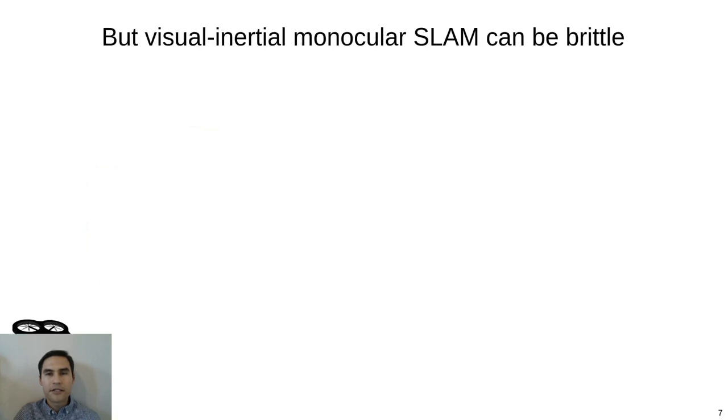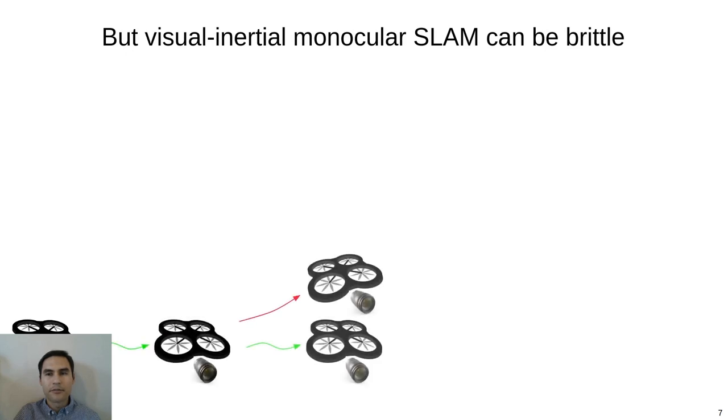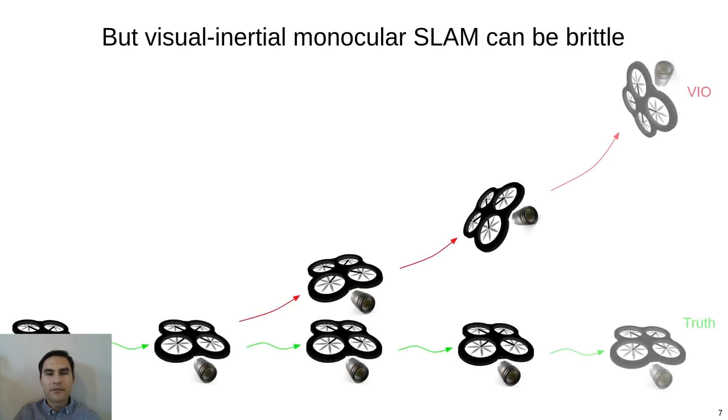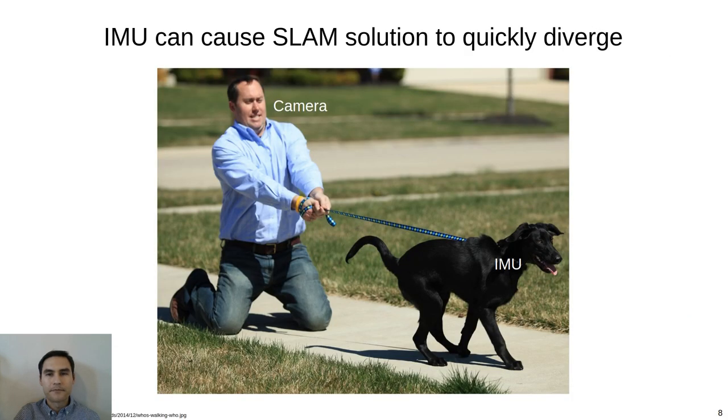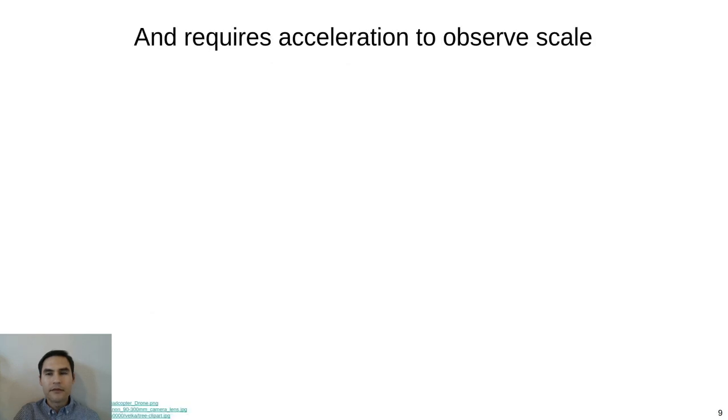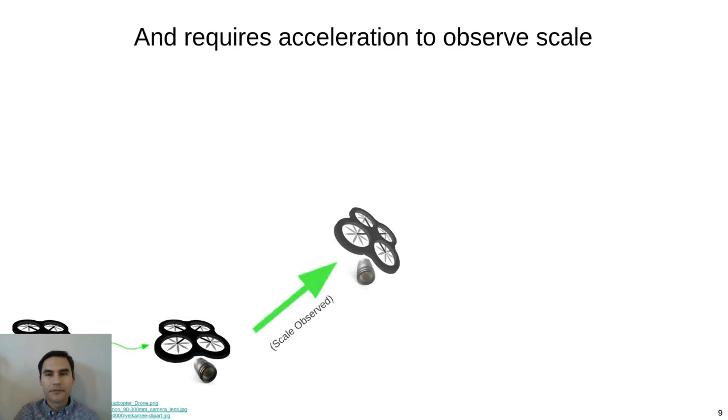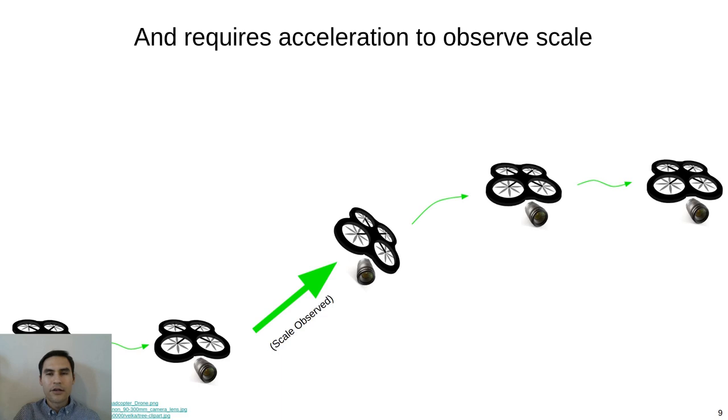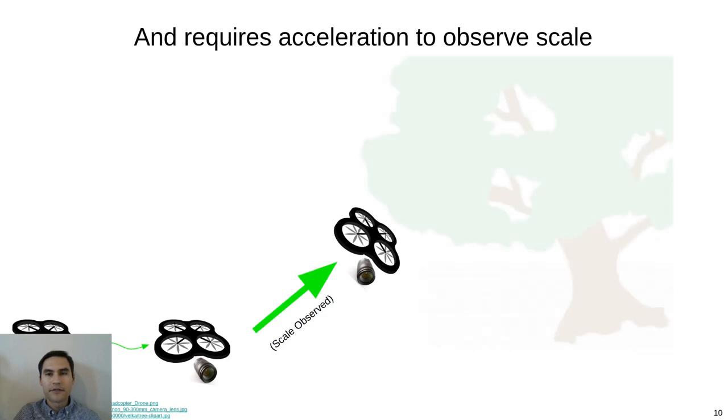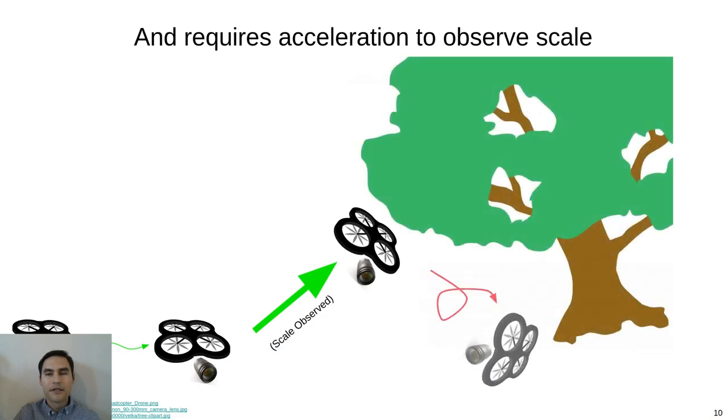First, extracting metric scale from the IMU requires careful estimation of the accelerometer biases. Any errors in these bias estimates are doubly integrated into the position of the camera. Furthermore, if care is not taken, the IMU can cause the SLAM solution to quickly diverge by effectively running away from the camera. Furthermore, scale is only observable to the IMU under acceleration. Such otherwise unnecessary accelerations can be very dangerous for mobile robots, such as micro aerial vehicles.